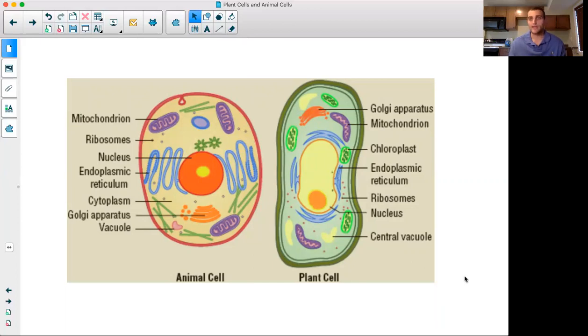Plant cells have these large central vacuoles. And these large central vacuoles can hold significantly more water than the vacuoles found in an animal cell. So the plant cells' vacuoles can hold more water than those in an animal cell.